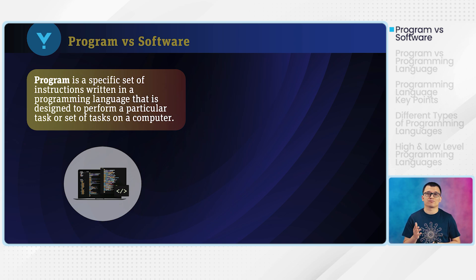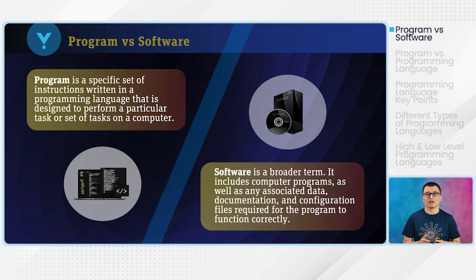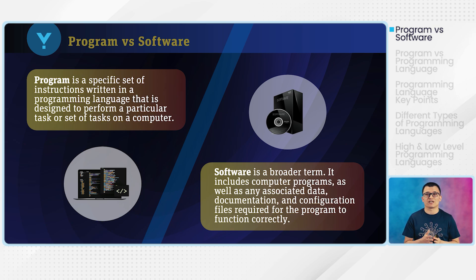Examples of programs include applications such as word processors, web browsers, and games. Software, on the other hand, refers to a broader category of computer programs. It basically includes everything that is needed to run a program, such as the operating system, libraries, and compilers. Those operating system libraries, compilers, as well as the debugger — all of them are needed in order to run a program.